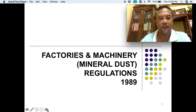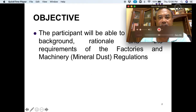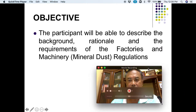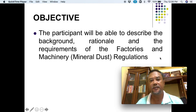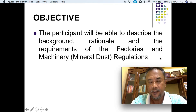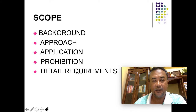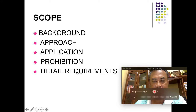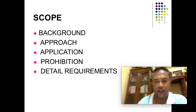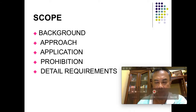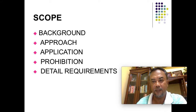In these regulations, the objective is for participants to describe the background, the rationale and the requirements of the factories and machinery in relation to mineral dust. They came out with this regulation because the hazard is very dangerous for workers. The scope covers the background of mineral dust, the approach employers have to take, the application, what the regulation is applied for, prohibitions, and the requirements under this regulation.